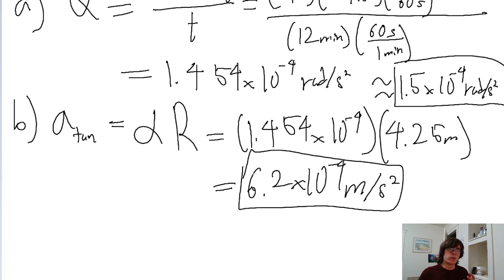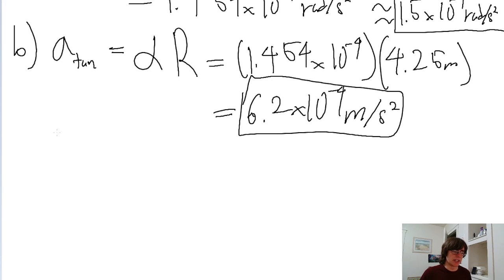Now, the radial component of the linear acceleration is a little trickier, because it requires us to know the instantaneous angular velocity at that point in time. We're going to find that using our rotational kinematics equations. One of the rotational kinematics equations says that the final angular velocity equals initial angular velocity plus the angular acceleration times the time interval.